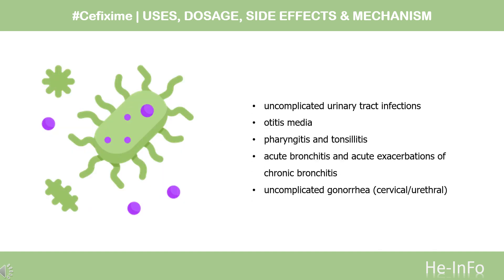What is Cefixime used for? For use in the treatment of the following infections, when caused by susceptible strains of the designated microorganisms. 1. Uncomplicated urinary tract infections, caused by Escherichia coli and Proteus mirabilis.